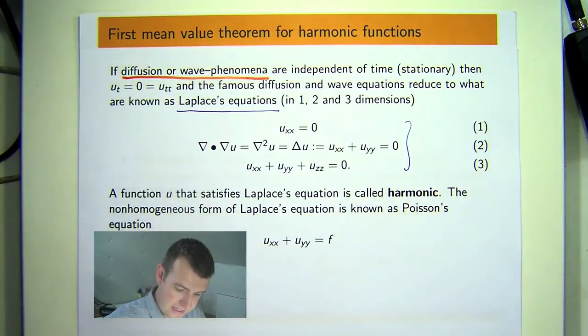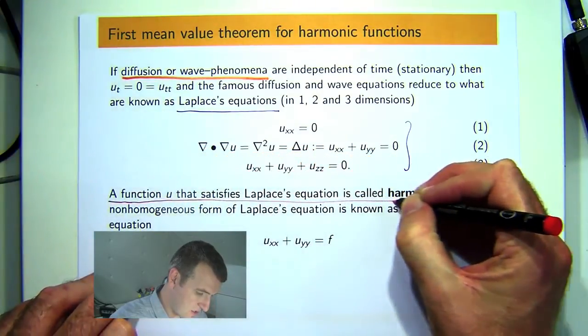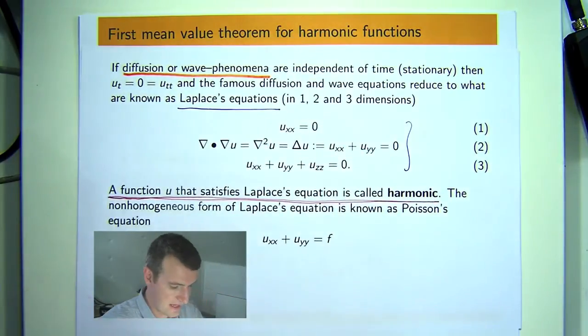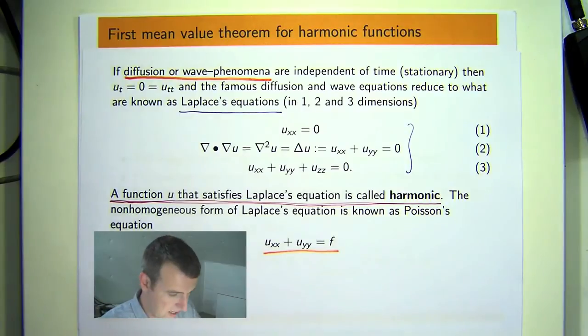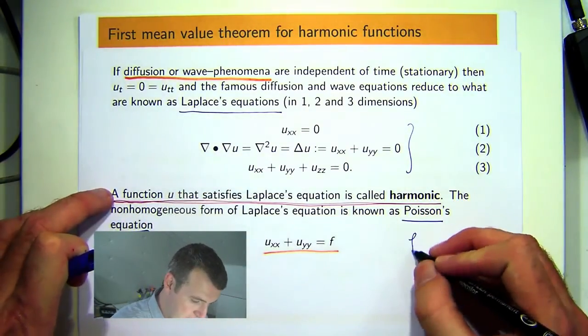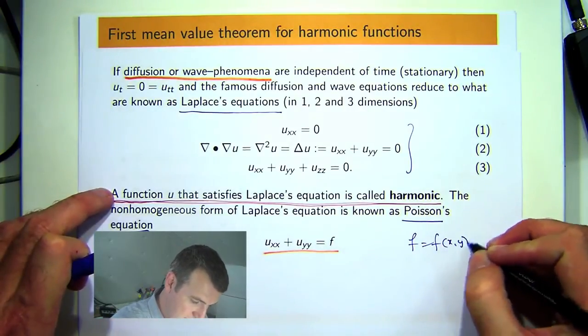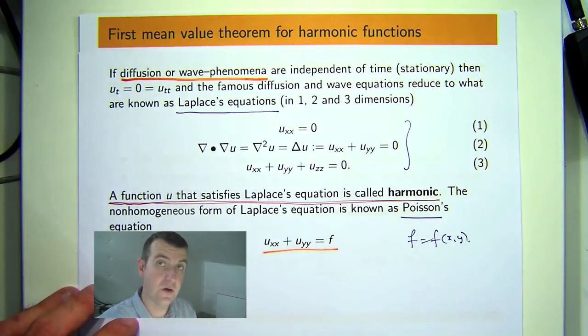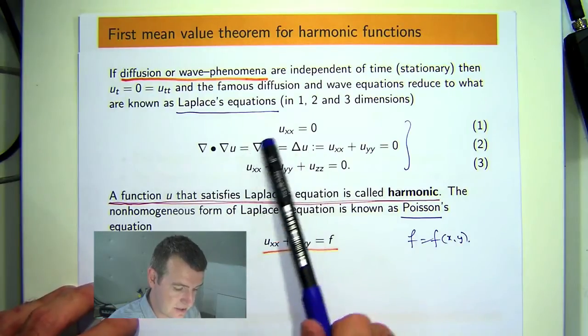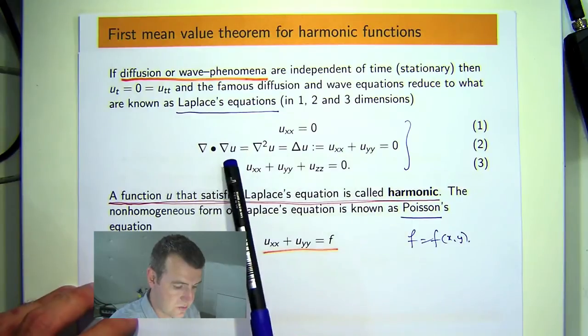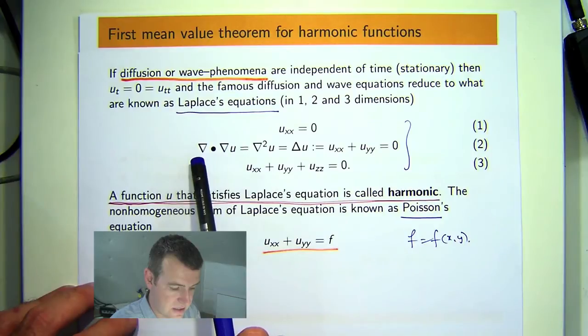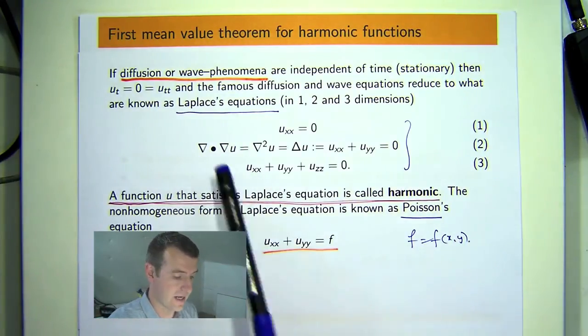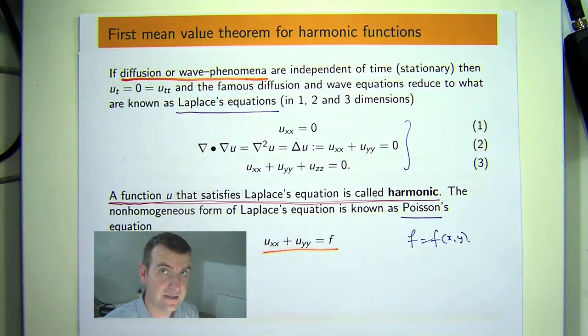In that case, the diffusion and the wave equations both reduce to various forms of the Laplace's equation. A function u that satisfies the Laplace's equation is called harmonic. And some books go a little further and say u is a C2 function, so it has second order partial derivatives that are continuous. There is a non-homogeneous or inhomogeneous version of the Laplace's equation called Poisson's equation, where f would depend on x and y. To abbreviate the summation of the second order non-mixed partial derivatives, sometimes we use this delta u, sometimes we use nabla squared u, and in vector calculus, you would abbreviate it to the divergence of the gradient. And you learn about these operations in a third course in calculus, which is known as vector calculus.